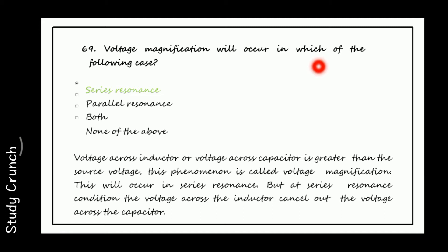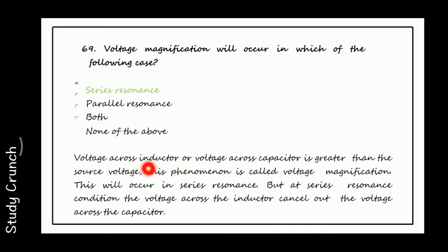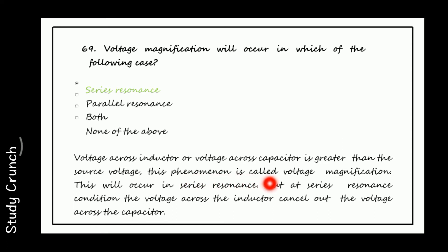Voltage magnification will occur in which case? Voltage magnification occurs in series resonance, as the voltage across the inductor or capacitor is greater than the source voltage. This phenomenon is called voltage magnification and occurs in series resonance. At series resonance, the voltage across the inductor cancels out the voltage across the capacitor.